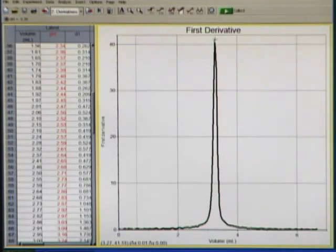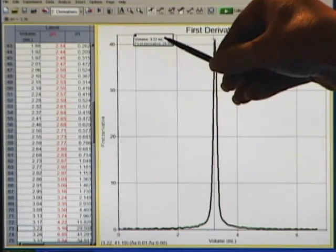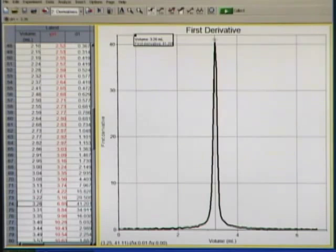The peak of this first derivative peak is going to tell us what our equivalence point volume would be. If I turn on the examine button on the toolbar and come over here to the peak, it is showing us that the volume is around 3.2 milliliters for that equivalence point.